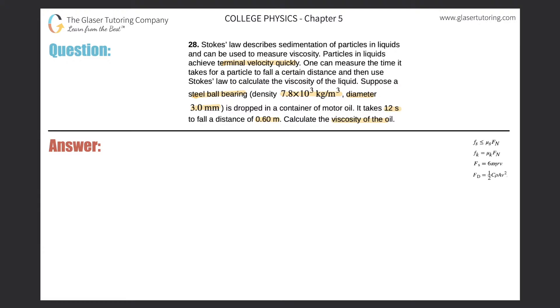Alright, so first let's start with Stokes' law. It says that the force that opposes the motion is equal to 6 times π times the viscosity times the radius of the object, then times the velocity: F_s = 6πηrv.